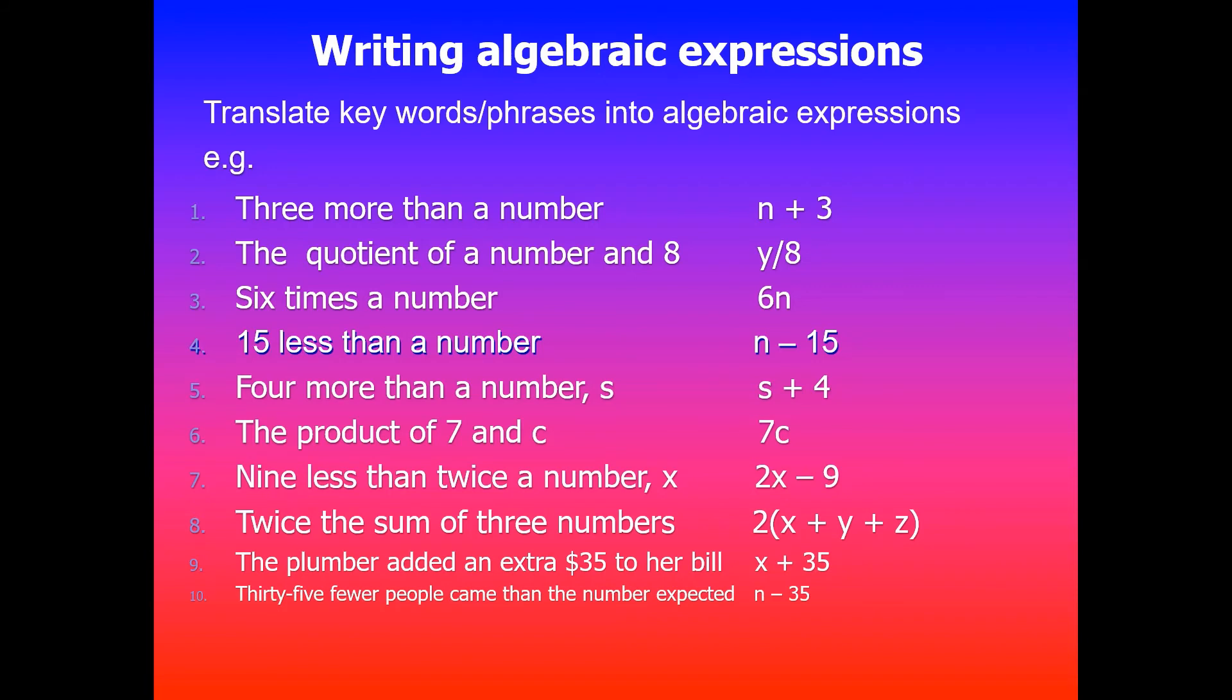Last one here: 35 fewer people came than the number expected. We didn't know the actual expected number in this case, so we can denote that with any letter, so let's say n. And it says 35 fewer people came, so it's n take away 35—the expected number take away 35.